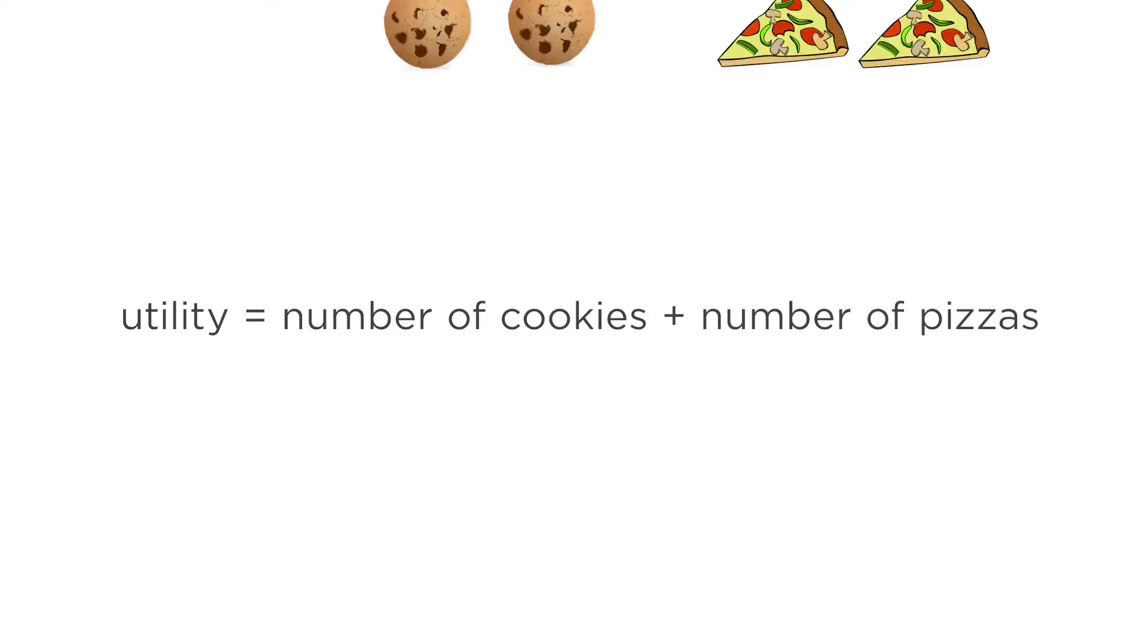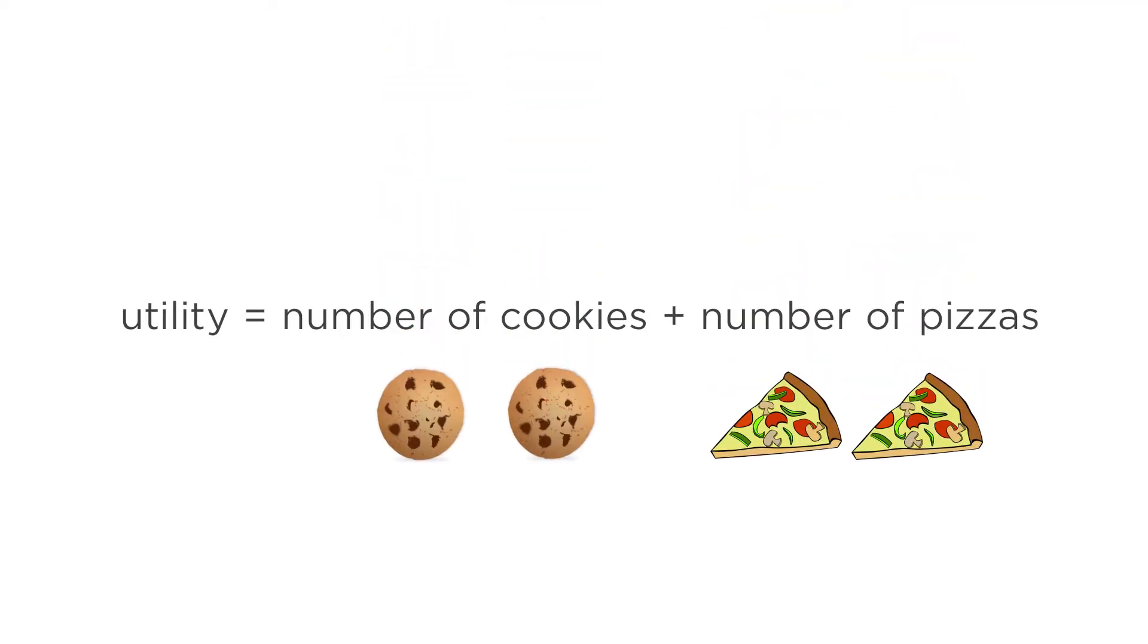What a utility function does is turn goods into happiness. When economists work with utility functions, we typically write down a specific math equation. It could be something easy, like utility equals number of cookies plus number of pizzas. Or something more difficult, but more realistic. We'll explore that in the math supplement to this lecture. But you don't need the math as long as you get the intuition. A utility function describes how happy the goods you consume make you.